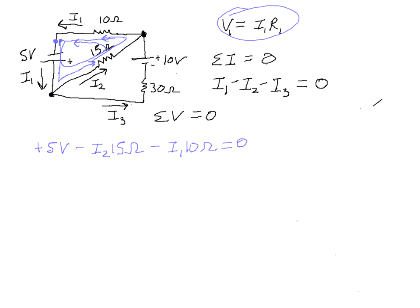Well, we need one more equation. Because we have three unknowns, I1, I2, and I3, we have only two equations so far. Let's get one more. So this time, take the bottom loop.